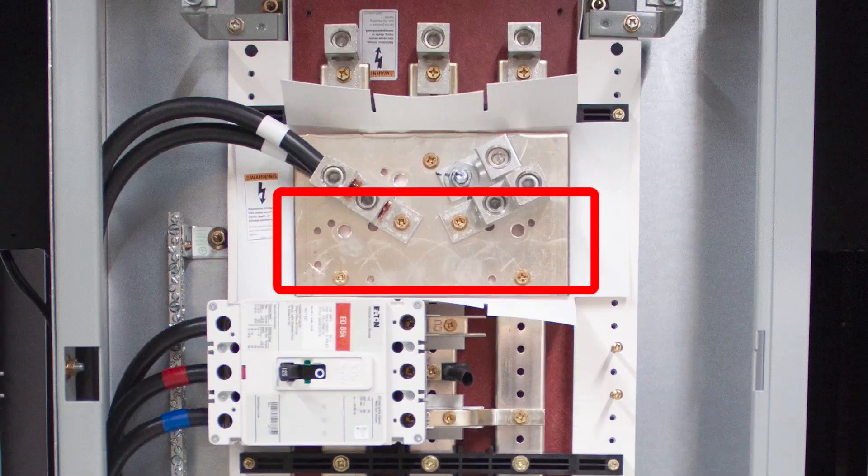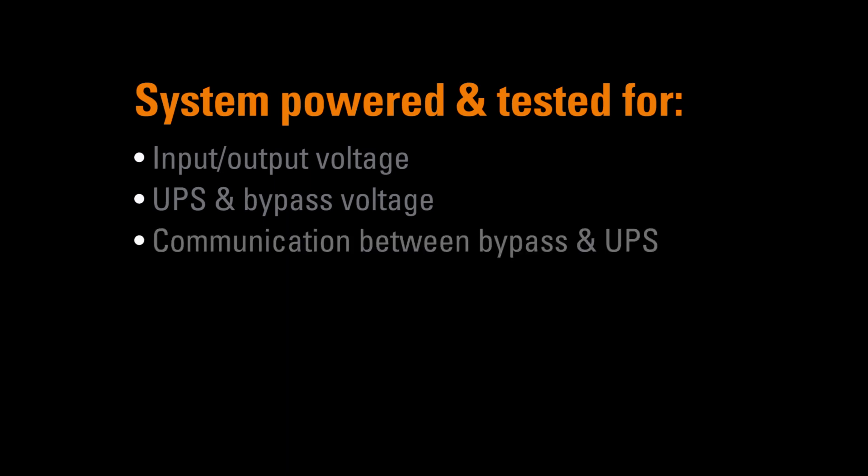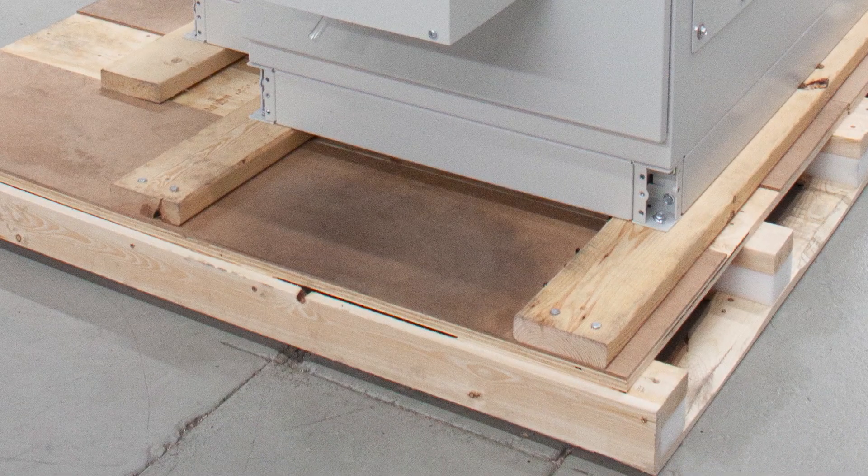Only a single input and output connection is required at installation site. The system was temporarily powered, started up using the manufacturer's recommended procedure, and functional testing was completed, covering input and output voltage, UPS and bypass voltage, and current readings taken at the output, communications and correct operation between maintenance bypass and UPS, HVAC system, emergency systems including hydrogen over-limit and ambient over-temperature, and full system load test. The system was then secured to a custom shock pallet and prepared for shipping.